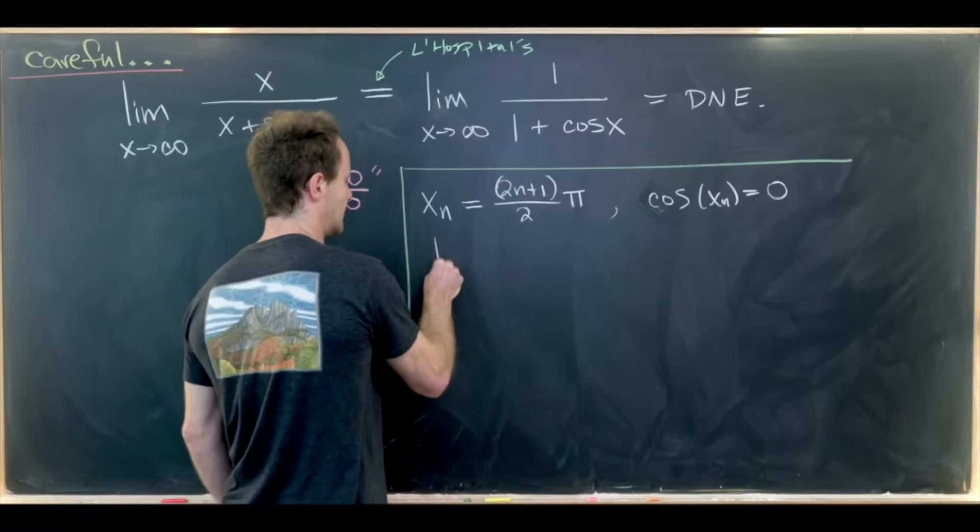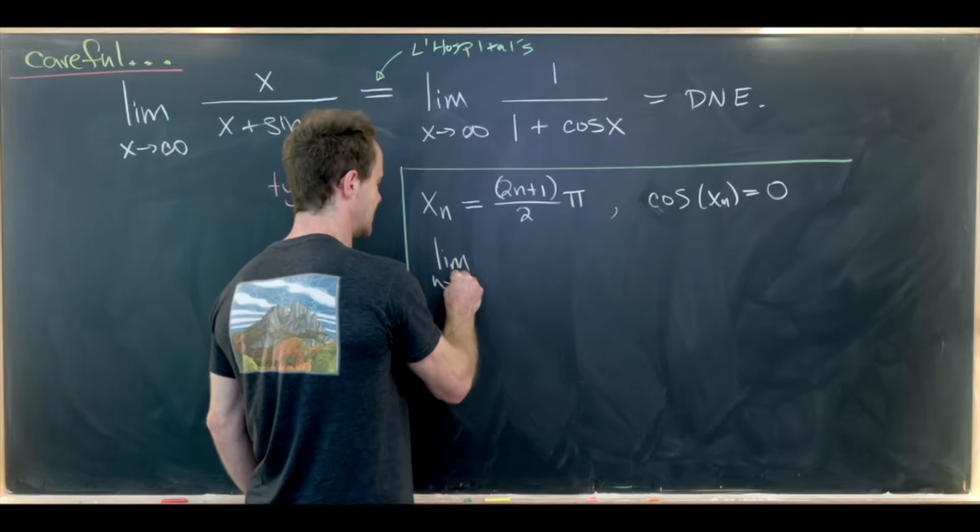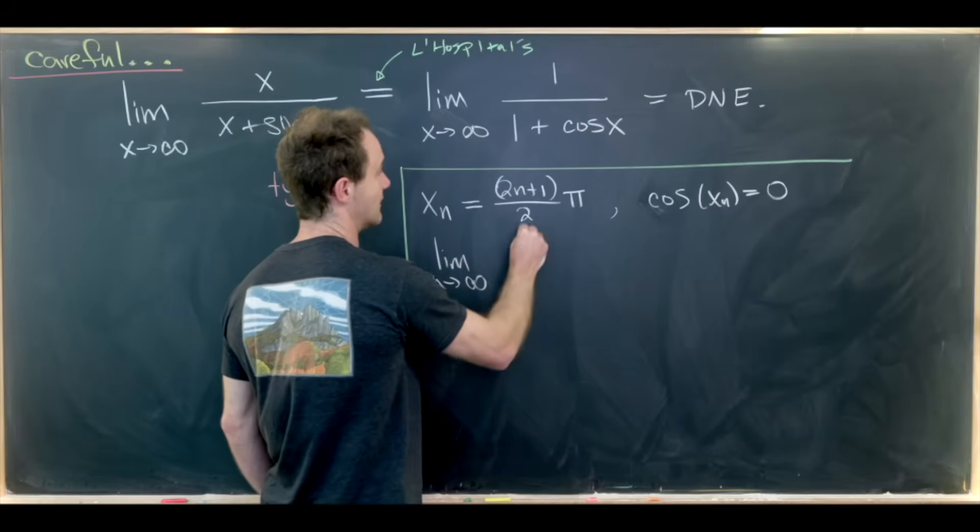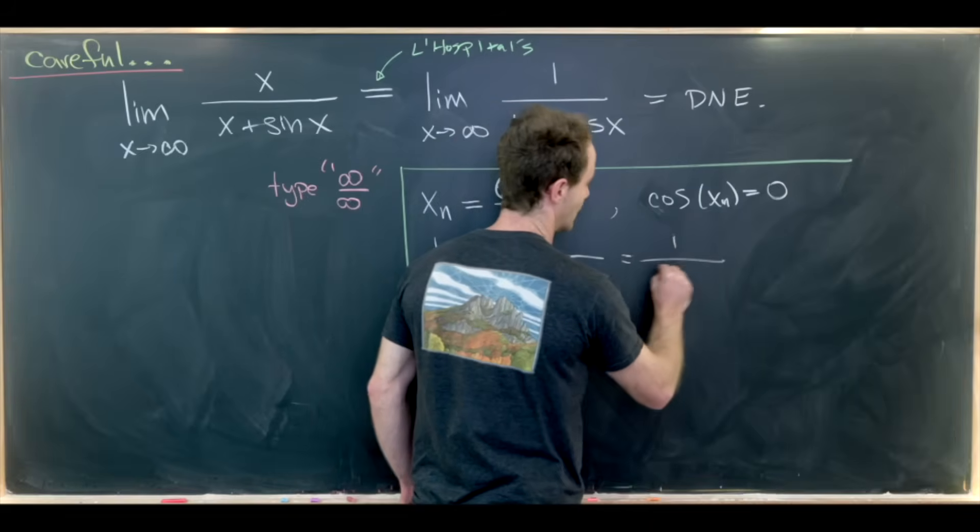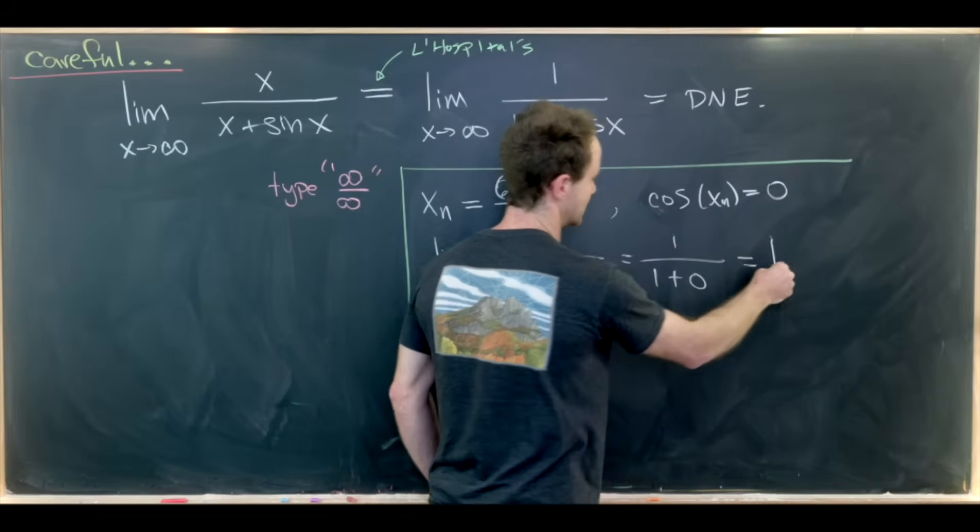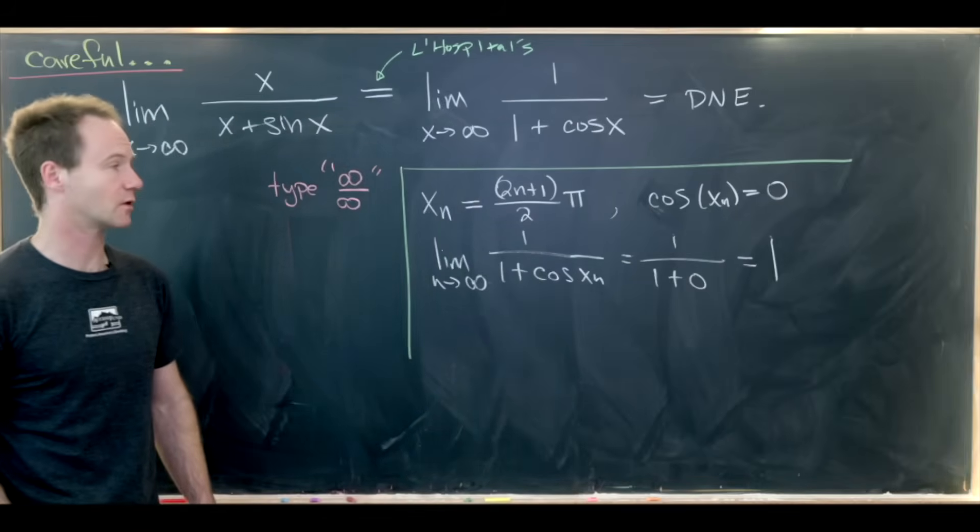Now let's take the limit as n goes to infinity of 1 over 1 plus cosine of xn and note that we get 1 over 1 plus 0, which is in other words the number 1.